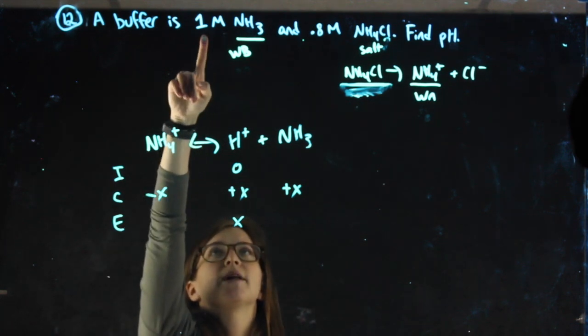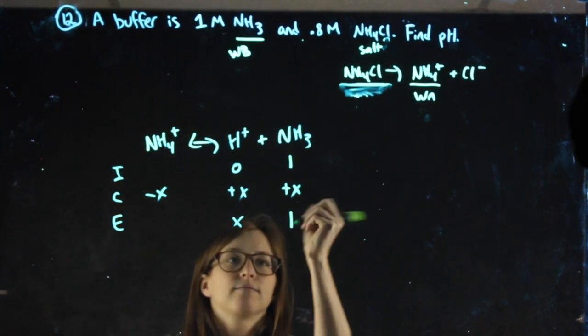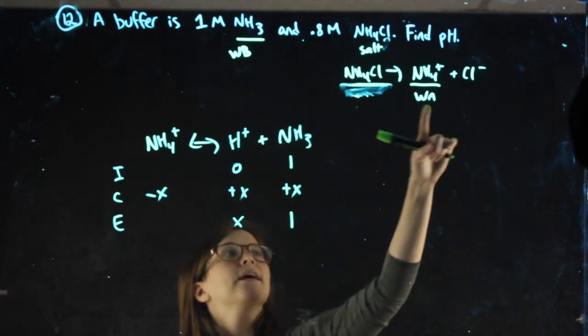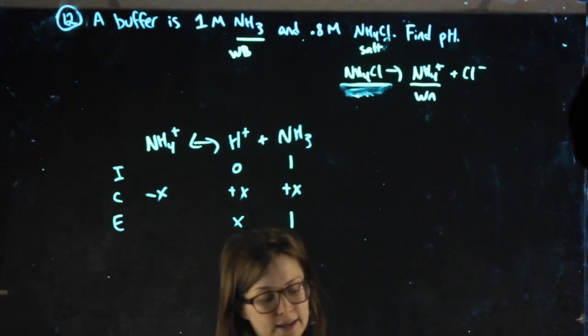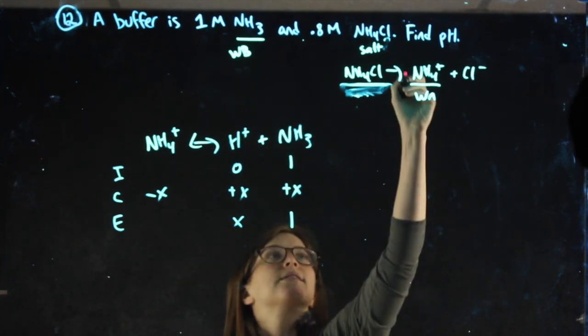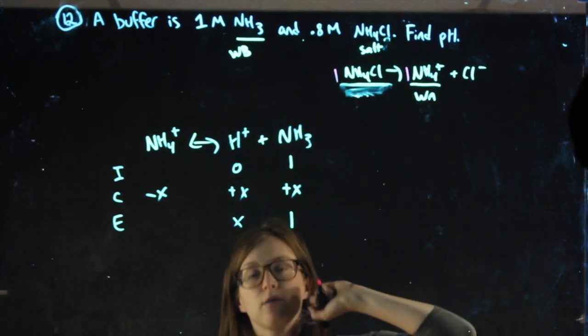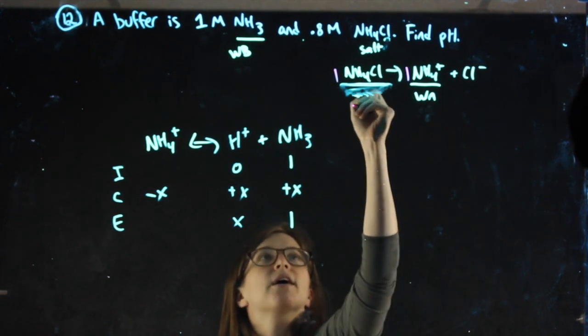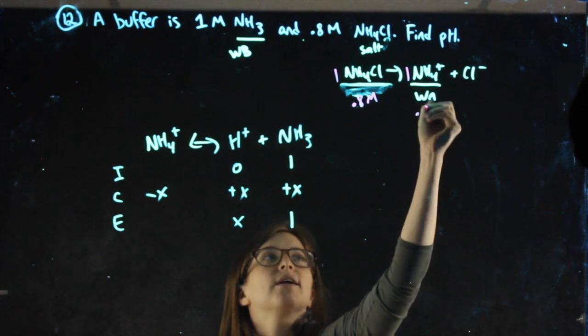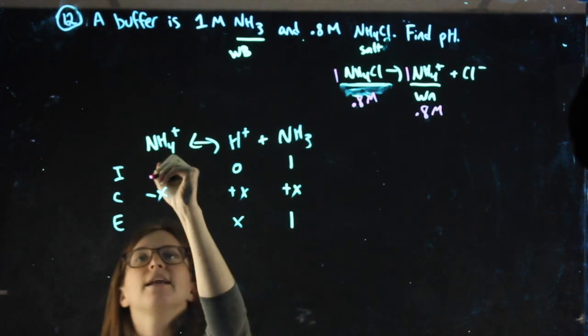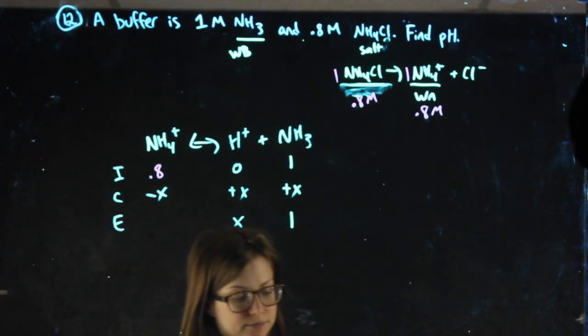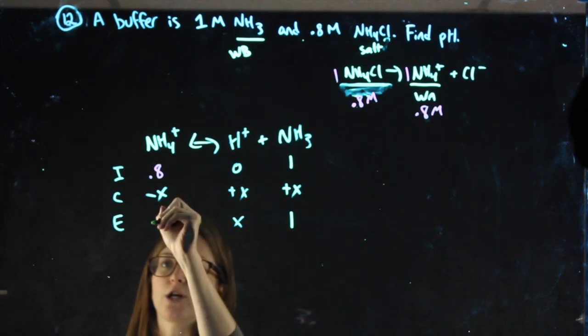My NH3 molarity is 1, that can go here. My NH4+ molarity I don't directly have, but because it's a 1 to 1 ratio, the molarity of the NH4Cl will equal the molarity of my NH4. I can plug that into my ICE chart and keep going.